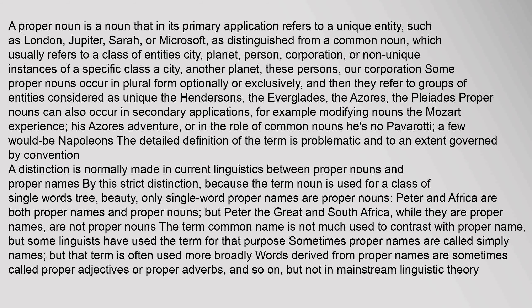The detailed definition of the term is problematic and to an extent governed by convention. A distinction is normally made in current linguistics between proper nouns and proper names. By this strict distinction, because the term noun is used for a class of single words — tree, beauty — only single-word proper names are proper nouns. Peter and Africa are both proper names and proper nouns, but Peter the Great and South Africa, while they are proper names, are not proper nouns. Words derived from proper names are sometimes called proper adjectives or proper adverbs, but not in mainstream linguistic theory.